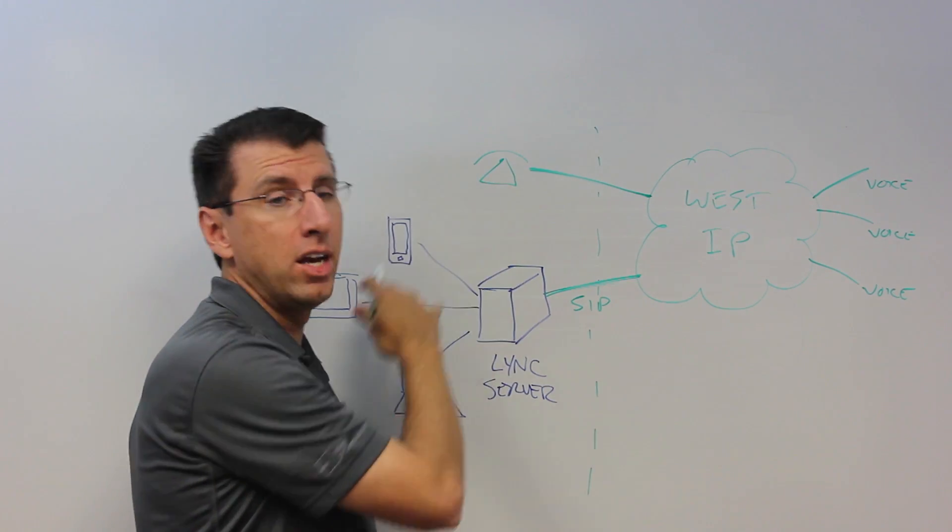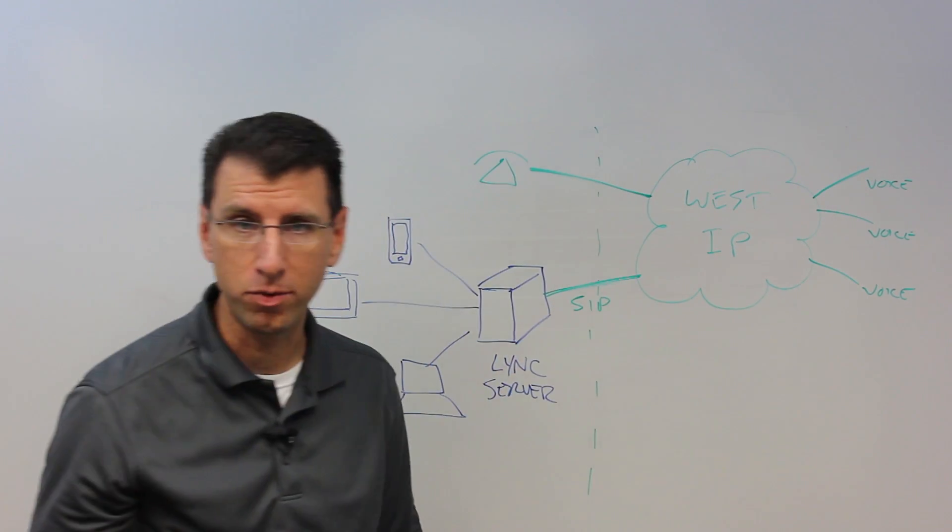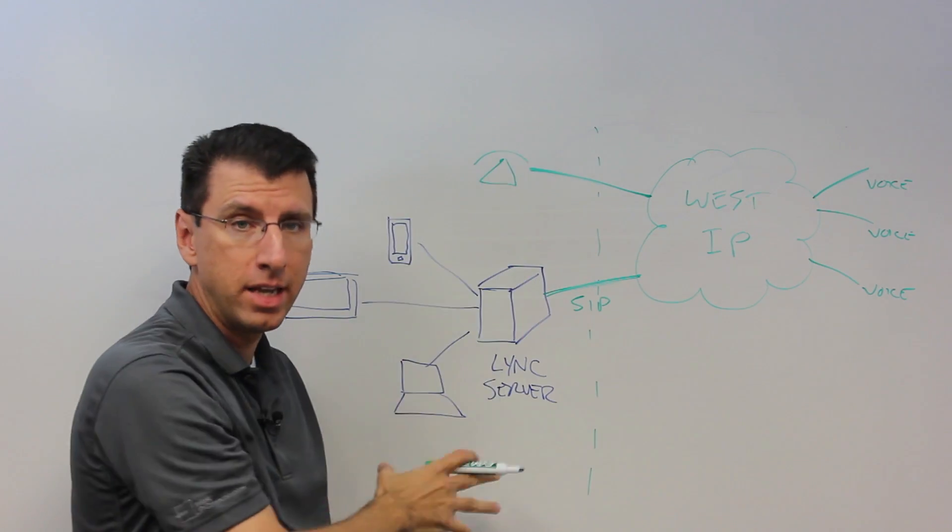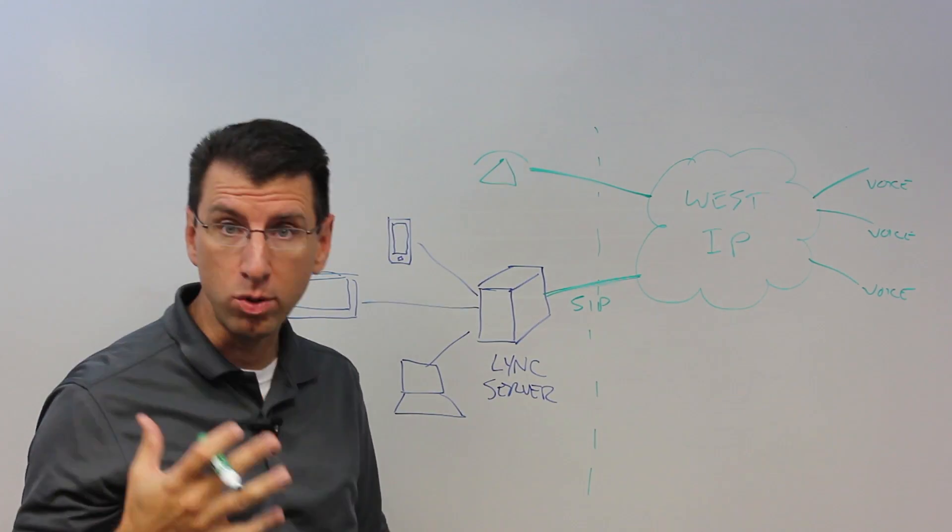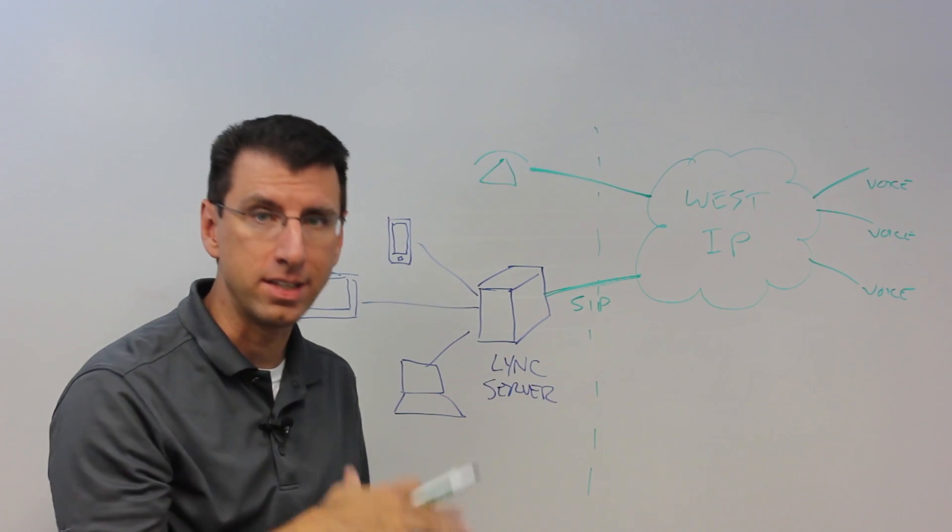So that if you're making calls from Lync, it's going to look like it's coming from your desk phone. If calls are coming in, you can simultaneously ring your Lync clients and your desk phone. It basically really gives you a unified system with Lync as a key part of that system.